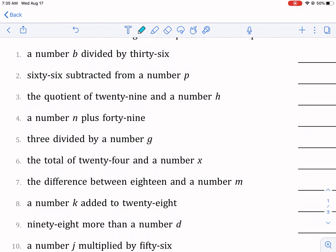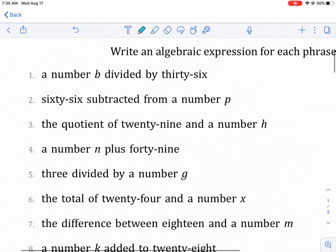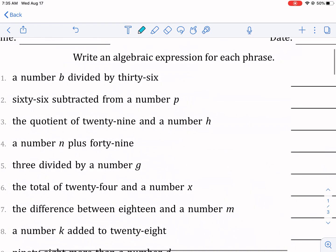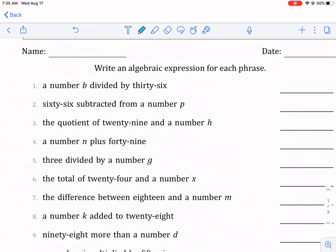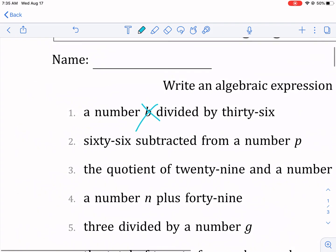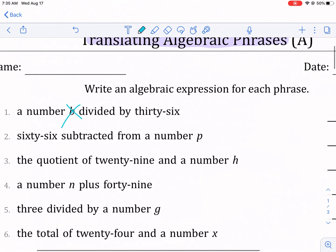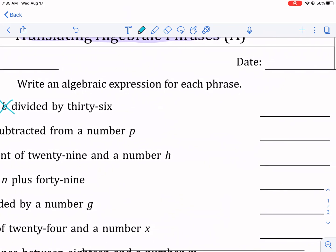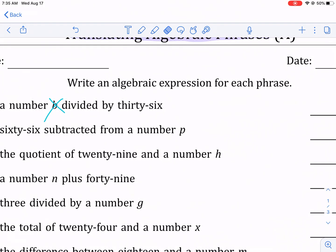So, a number b divided by thirty-six. This one's pretty straightforward. Anytime it says a number—most of the time it won't even say b, it'll just say a number divided by 36—so if it says a number divided by 36, it means any variable, but this one specifies that we want the variable b.